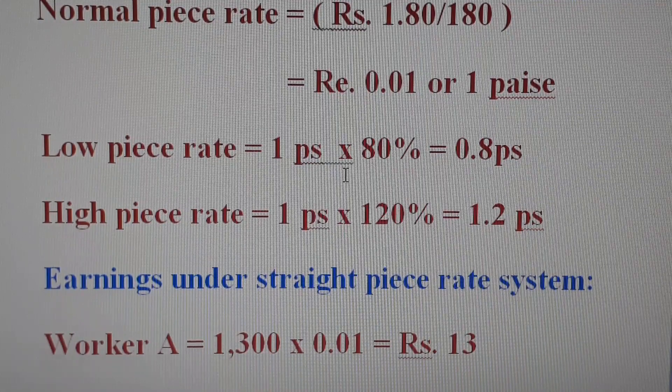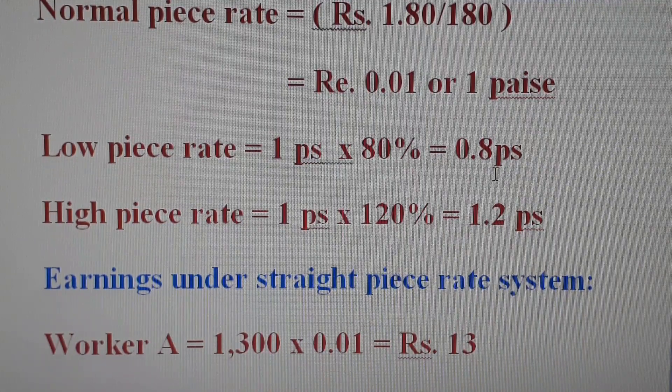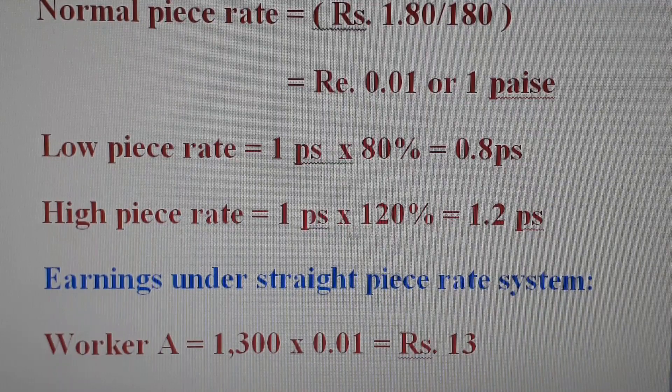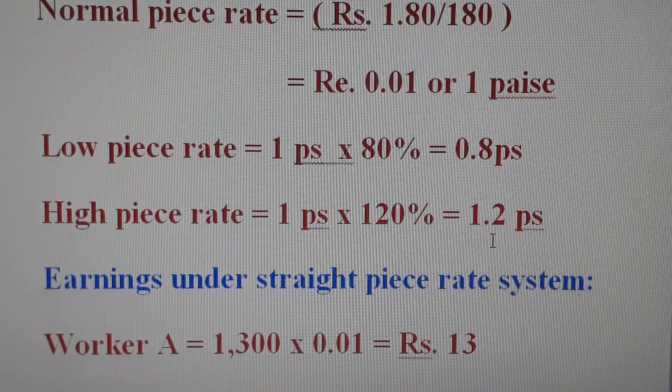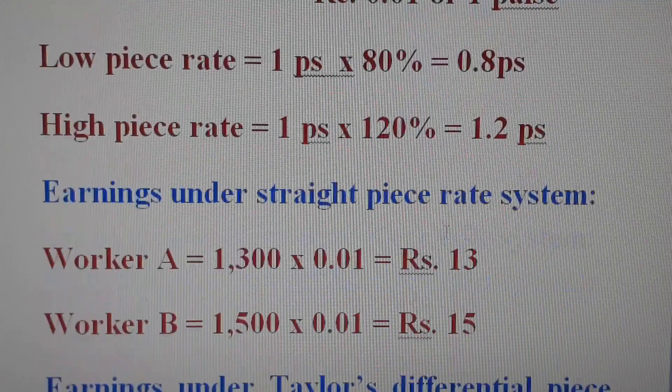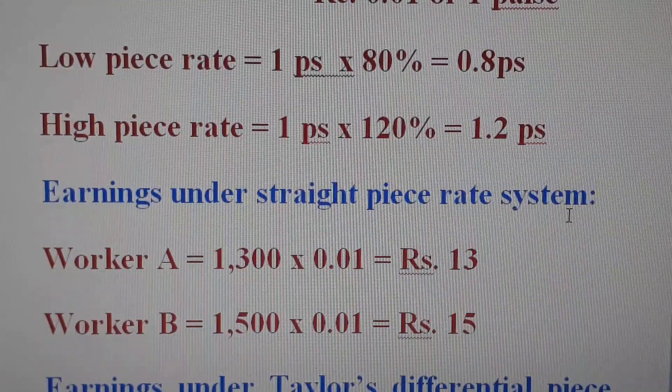Our low piece rate is Rs 0.008 per unit. The earnings under the straight piece rate system: the low piece rate is applied at 80% and the high piece rate is applied at 120%.